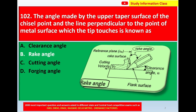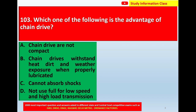This is the diagram of rake angle. So question number 102, correct answer is option B — rake angle. Next question: Which one of the following is the advantage of chain drive?